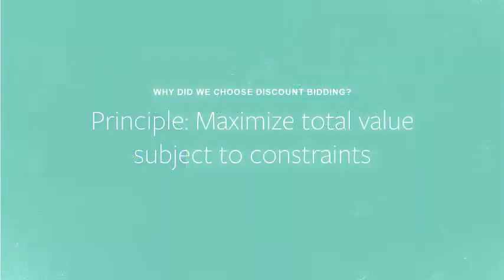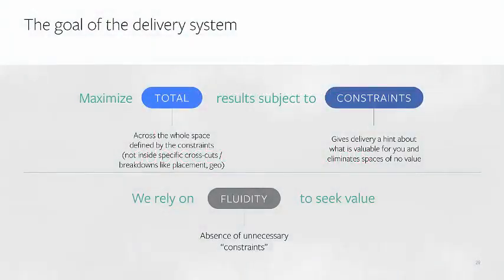Each of these examples illustrates one of the core principles defining Facebook's auction system: maximize total value or results subject to advertiser constraints. We try to maximize total advertiser results driven by an ad set, subject to constraints like bid, budget, schedule, targeting, or placement. These constraints give the delivery system clues as to what's valuable to you and eliminate the spaces where you find no value at all. For example, if you're an advertiser selling alcoholic beverages, people below a minimal drinking age in your location probably have no value to you, so you set your targeting to exclude those people. Fluidity — or the lack of unnecessary constraints — is important to our system's ability to return the most value to advertisers. Running media with an extended time frame, a large target audience, and multiple placement options will allow Facebook's best response bidding to run efficiently, as there will simply be more auctions that could be won to maximize your results.